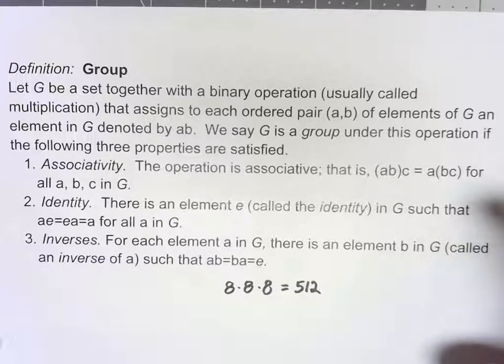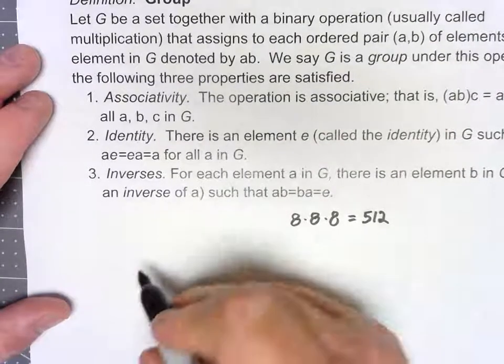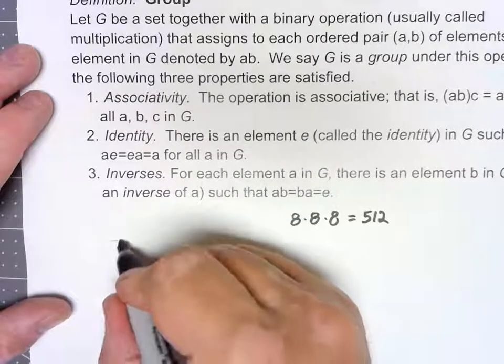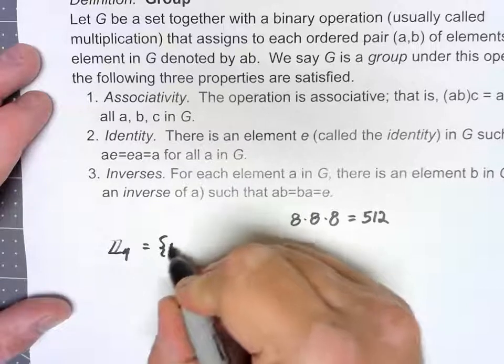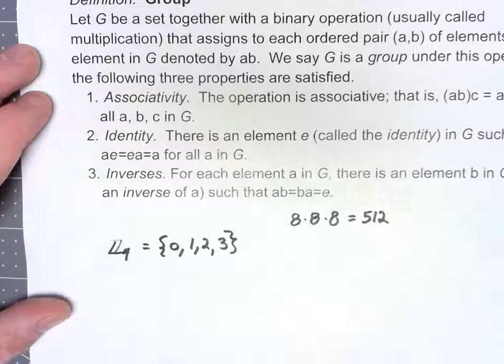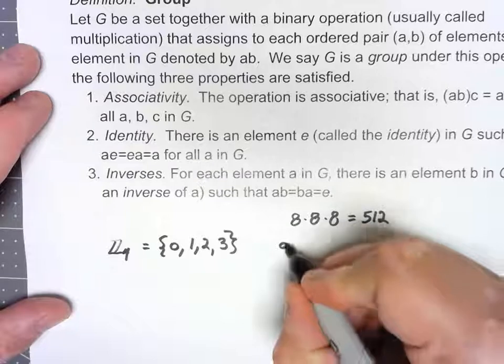Let's go ahead and let's take a look at another group. Let's take, just like I was doing before, we'll say Z4, which is the set 0, 1, 2, and 3. And let's say our operation is addition mod 4.